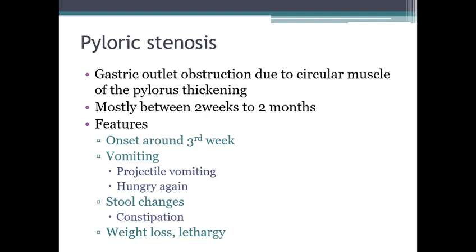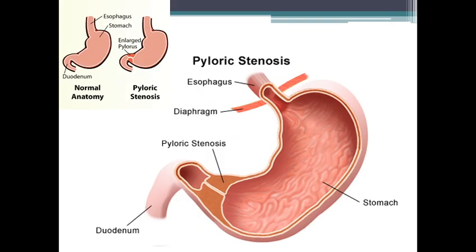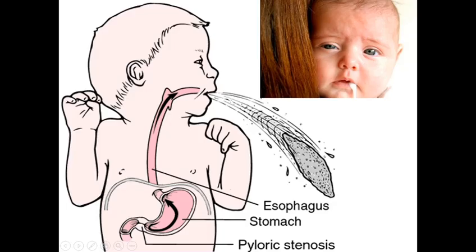Here is a diagram showing the cardiac sphincter and the pyloric sphincter where the stomach opens to the duodenum. The circular muscles have thickened and obstructed the pyloric opening. This is the mechanism of projectile vomiting — food cannot pass through this point and the child vomits forcefully, unlike normal vomiting.